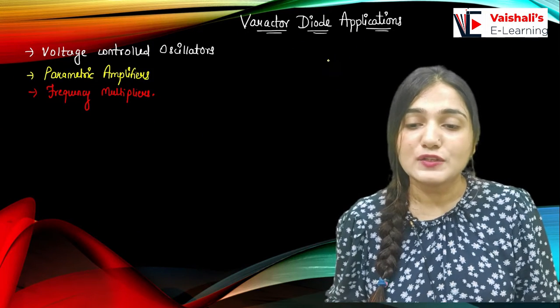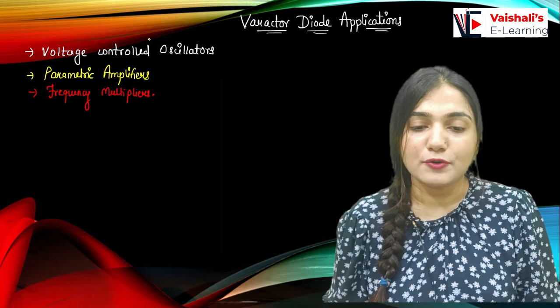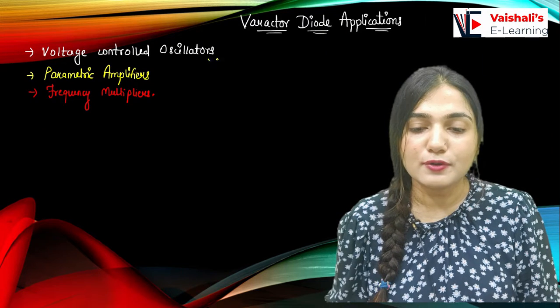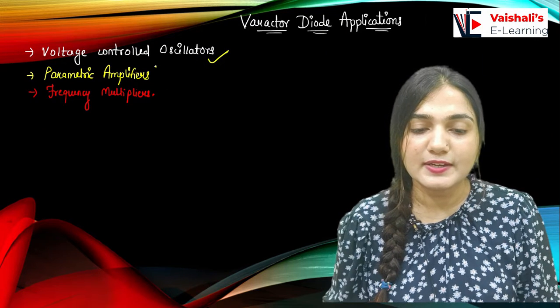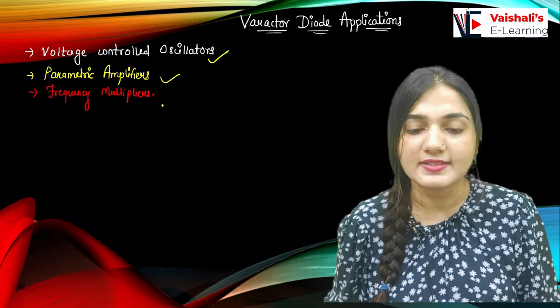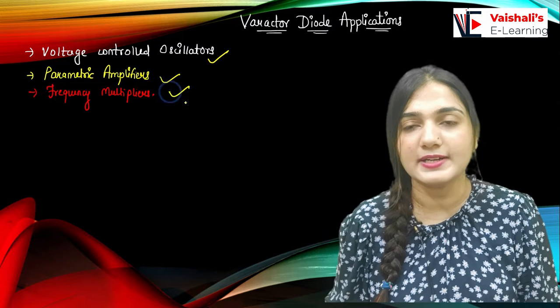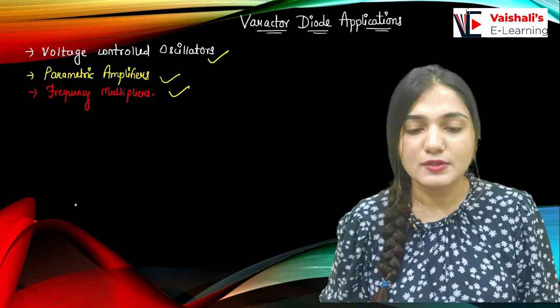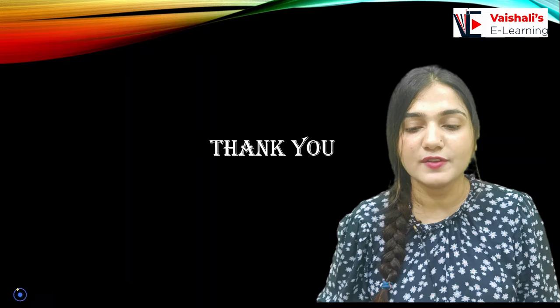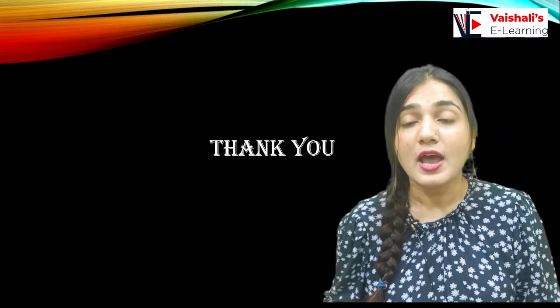Coming to the applications of the Varactor diode: it is used as a voltage-controlled oscillator, as a parametric amplifier, and as a frequency multiplier. These three are the main applications of the Varactor diode.